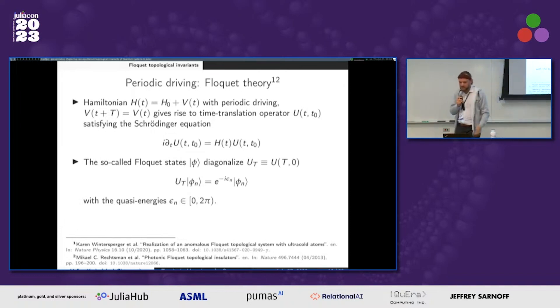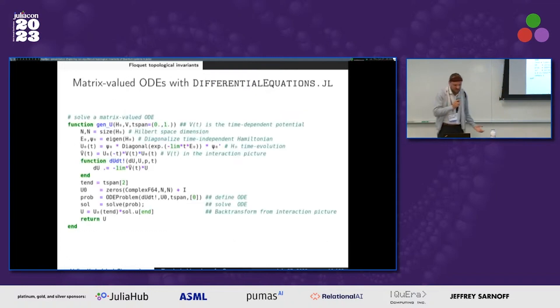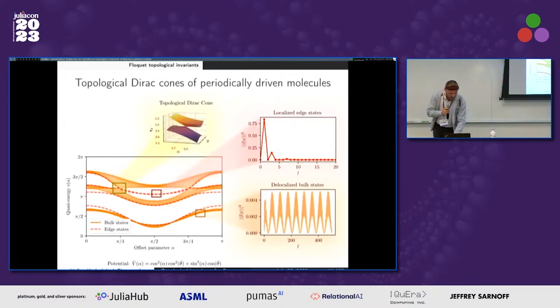But what we can do is we can diagonalize the time translation operator and learn a lot from this and look into the topology of the time translation operator. And then in Julia, it looks like this. It's very simple. You can just plug in an operator into the differential equation package, and it will solve the Schrödinger equation.